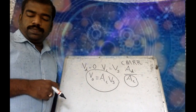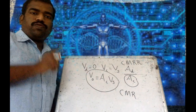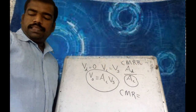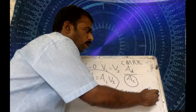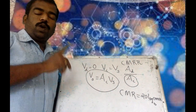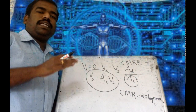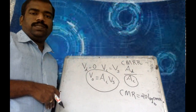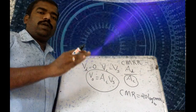CMRR can also be expressed in decibels, which is called CMR — Common Mode Rejection. You first find AD divided by AC, then take the logarithm and multiply by 20: CMR equals 20 log base 10 of (AD/AC). This CMR value expressed in decibels is called Common Mode Rejection and it is very important.